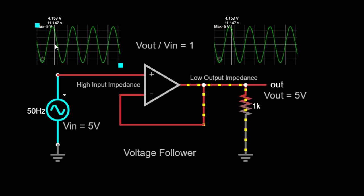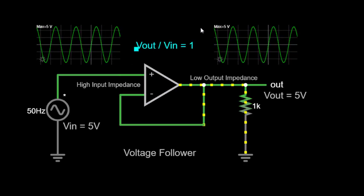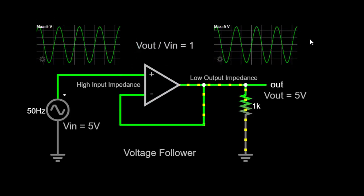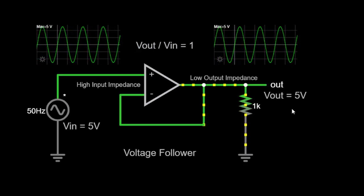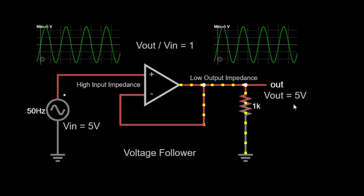The goal is to design a voltage follower that will output the same voltage as the input voltage, which is 5 volts. Let's observe how the circuit accomplishes this task.